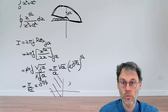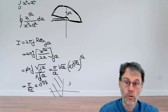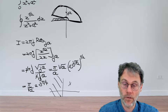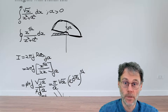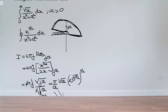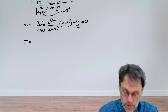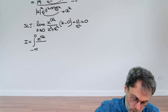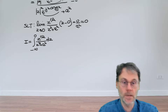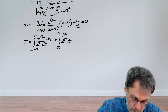The only remaining contributions are from the path just above the negative real axis and the positive real axis. We have the integral from -∞ to 0 of z^(1/2)/(z²+a²) dz, plus the integral from 0 to ∞ of z^(1/2)/(z²+a²) dz, and together these equal the value we computed from residue calculus.